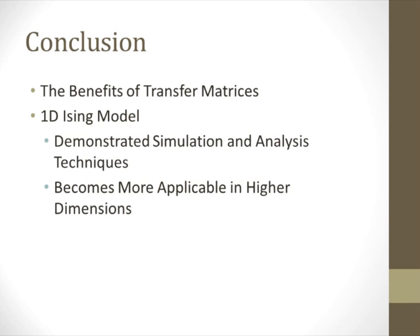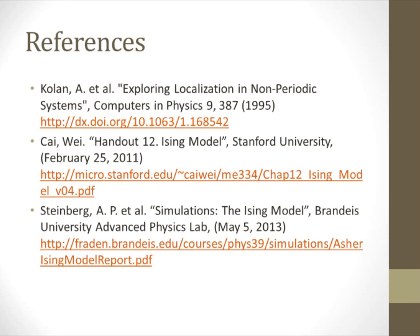Overall, I hope I've been able to demonstrate some of the benefits of working with transfer matrices, in addition to giving a brief look at how they can be applied to the Ising model. Although the 1D model can seem pretty trivial, its relative simplicity makes it an attractive regime to examine before introducing more complexity such as higher dimensions. For more information about the transfer matrix method, mass spring chains, and the Ising model, please see these references.